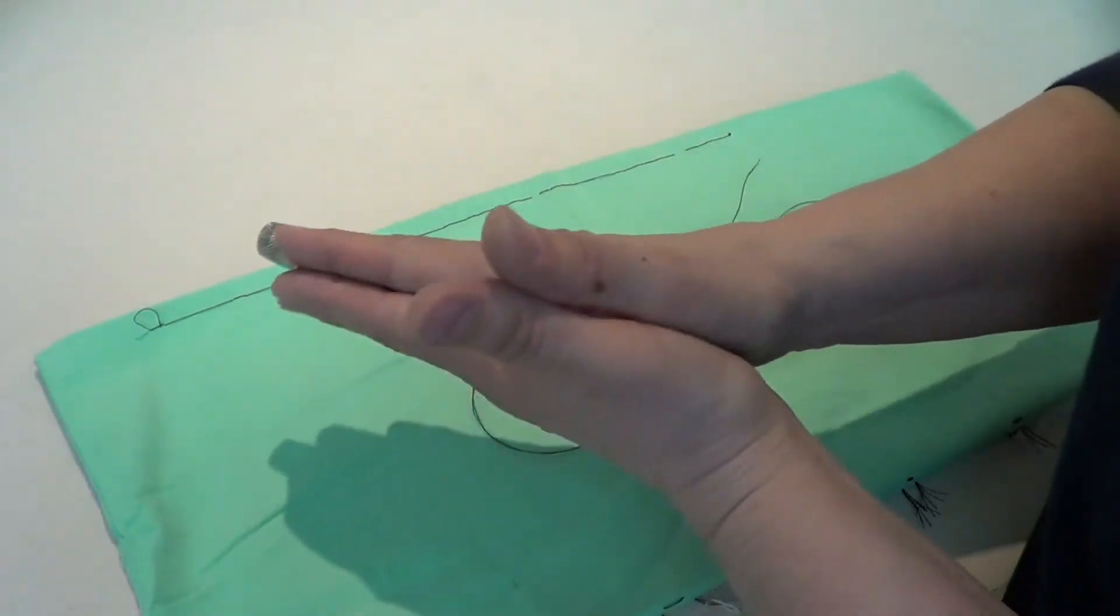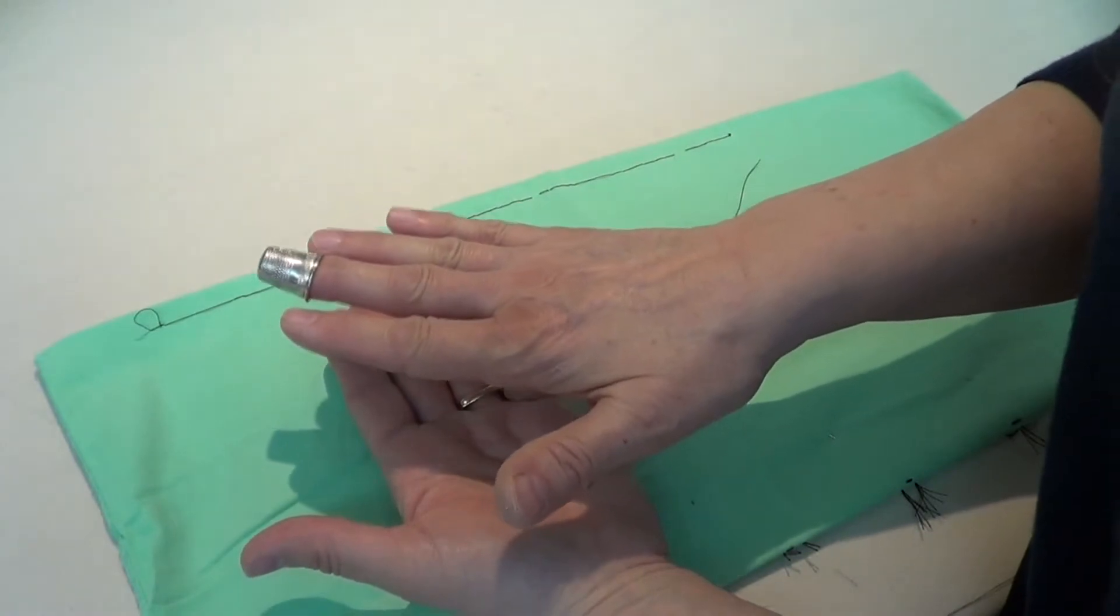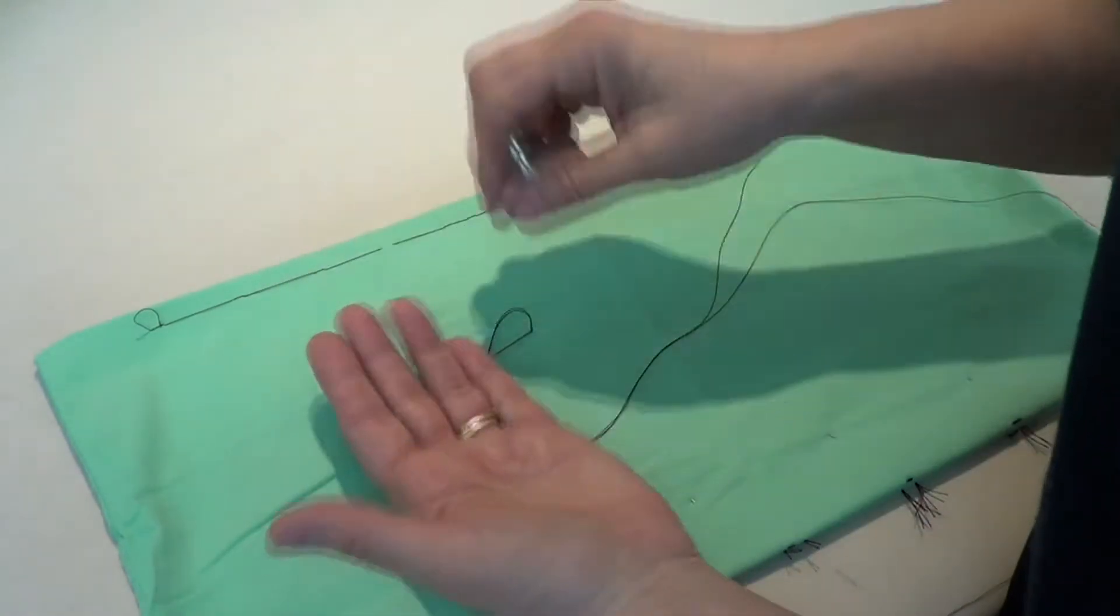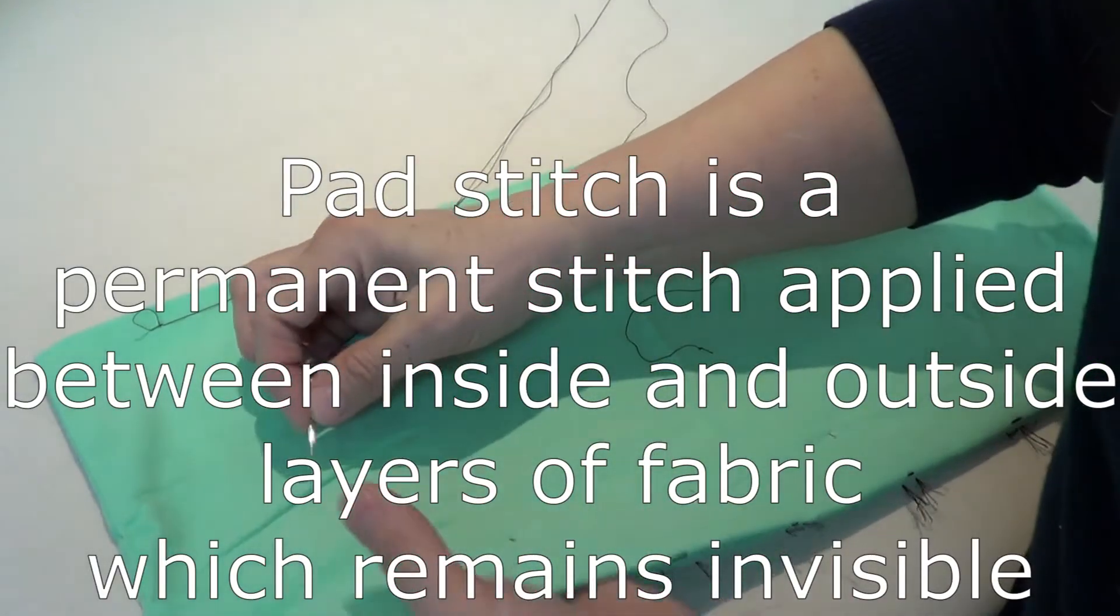In tailored garments there's a lot of work that goes on between the layers that you can't see and it needs to be held together. Now we term it a fuse stitch.